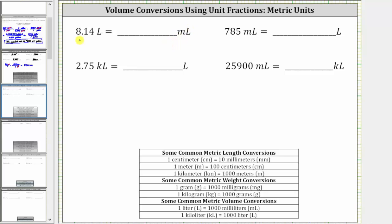The first step is to write 8.14 liters as a fraction with a denominator of one. And now we multiply by a unit fraction to perform the conversion. Looking at the conversions, notice how one liter is equal to 1,000 milliliters. We use this conversion to form the unit fraction.